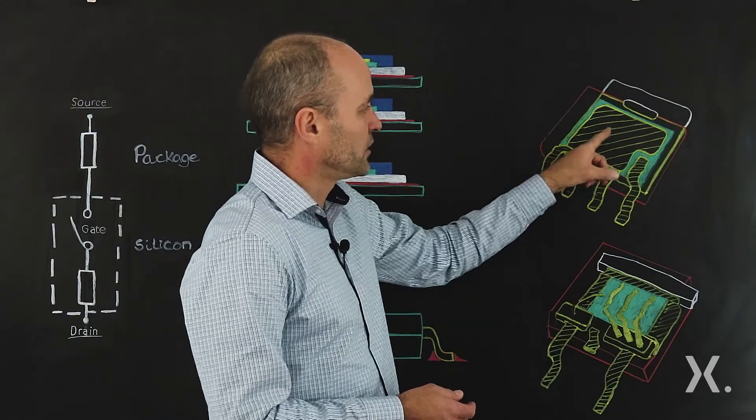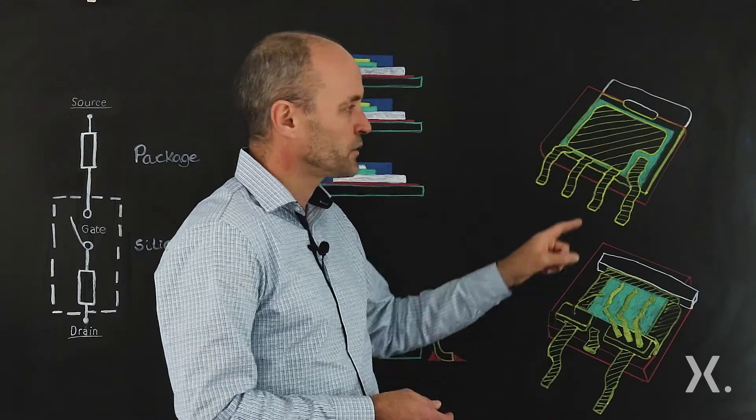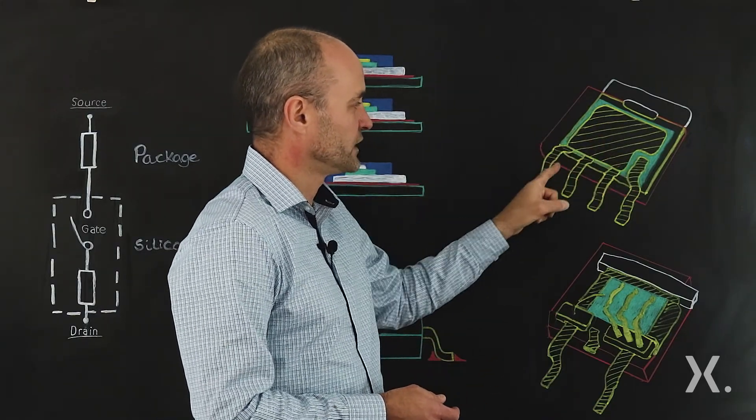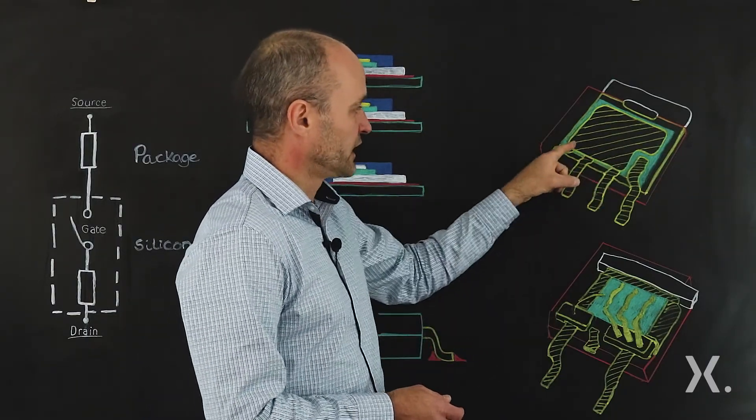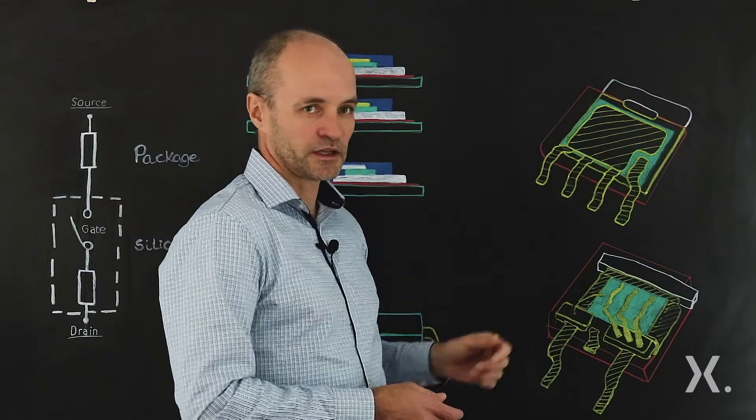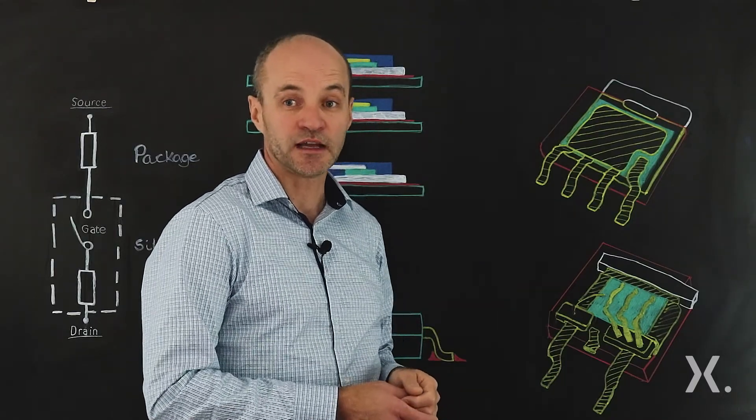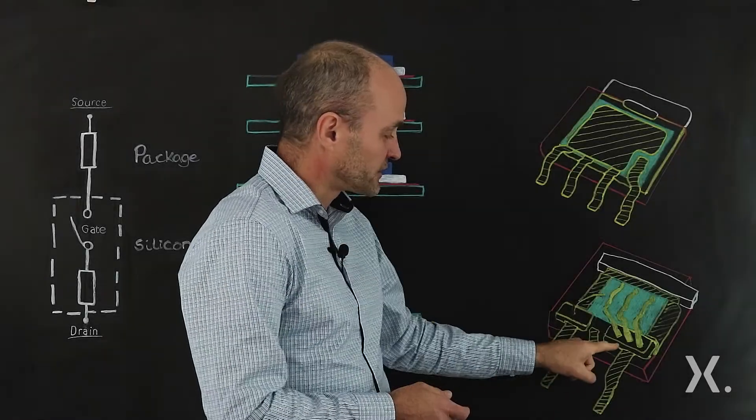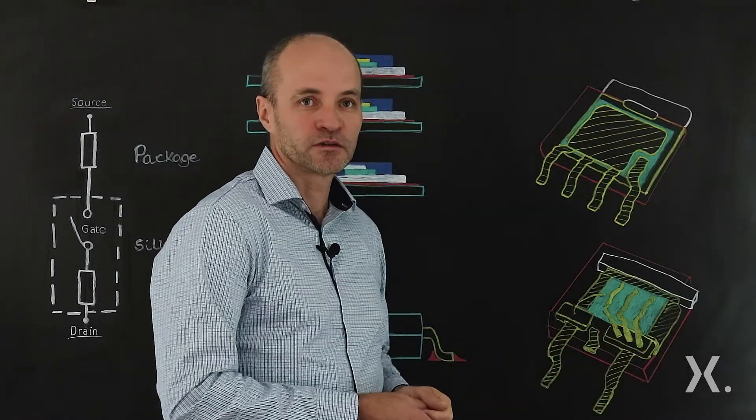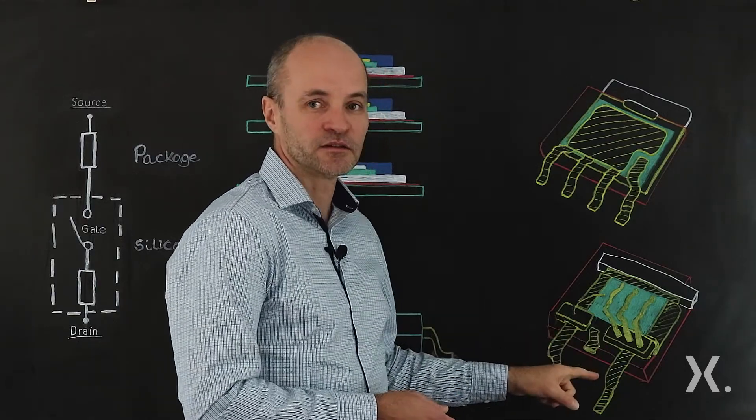If you look at the copper clip design, we have a very big source connection which gives you a very low package resistance, and we also have very short leads which also helps reduce the package resistance and inductance of the top clip.